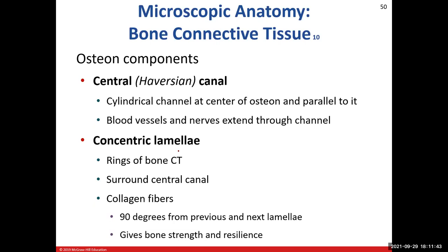The collagen fibers in the concentric lamellae are produced by osteoblasts in the osteoid. A really cool phenomenon: the collagen fibers are arranged at 45-degree angles in each concentric lamella compared to an adjacent lamella, making the angle between adjacent lamellae 90 degrees. So if one lamella has fibers running one direction, the next lamella's fibers run perpendicular to that.